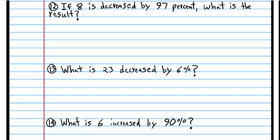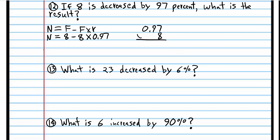This next one is a percent decrease. The number we're looking for is F minus F times R, because we're decreasing 8 by 97%. We take the original number and subtract 97% of it. Change 97% to a decimal: 0.97 times 8 gives 7.76.